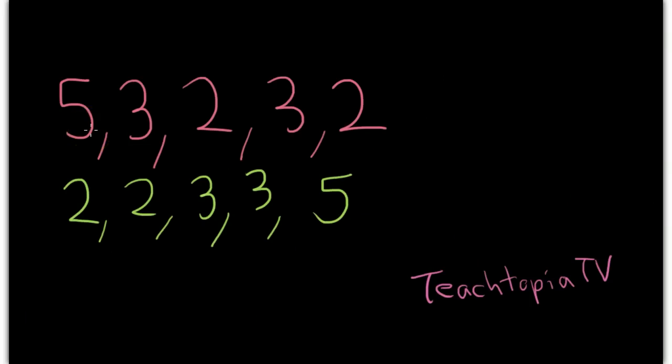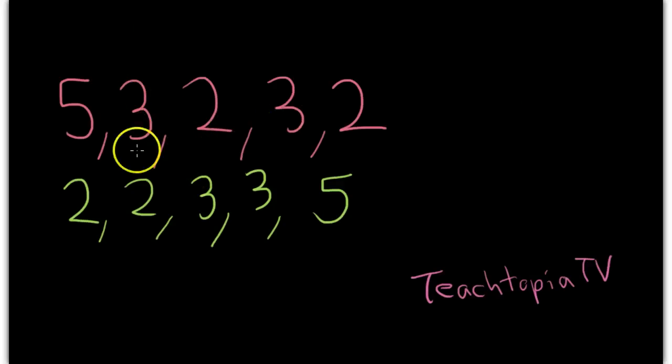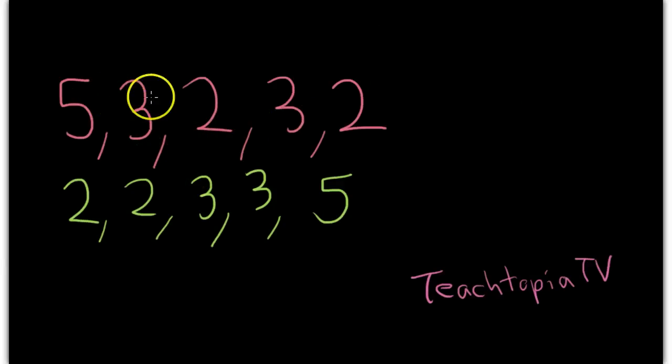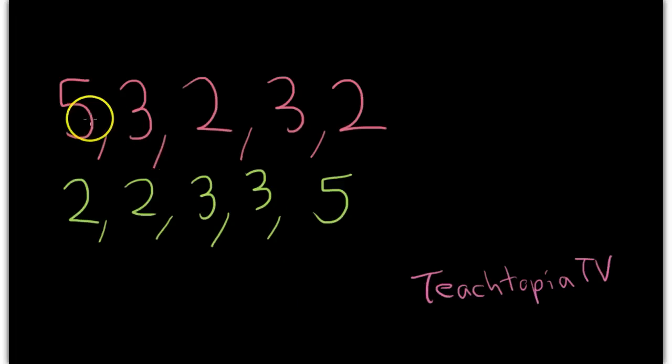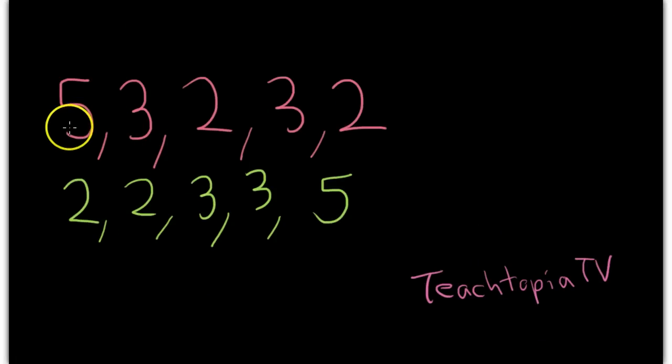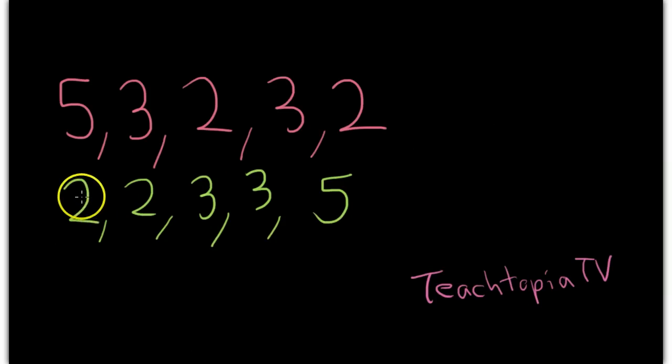Now, we're going to double check and make sure we use each one of the numbers. 5 is over there, we've got our two 3s, our two 2s. Everything's good. We used all the numbers from the first set and transferred them down to the second set in least to greatest order.